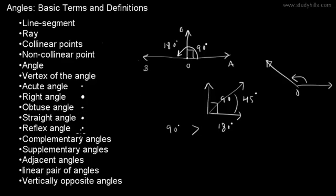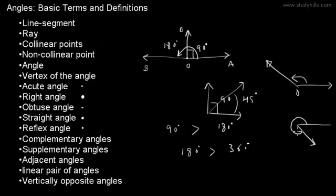A reflex angle is an angle which is greater than 180 degrees but less than 360 degrees. For example, this angle is greater than 180 degrees but less than 360 degrees, so it is called a reflex angle.